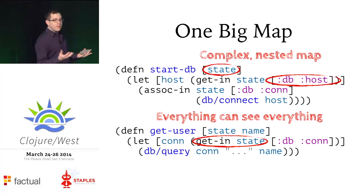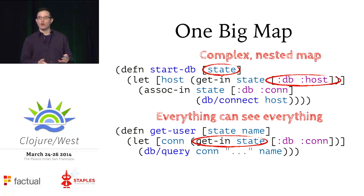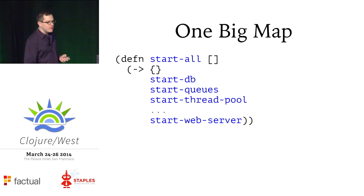This was an improvement — the state is at least local to the function. But the problem with having just one of these is that it ends up being very big and complicated. You have this deeply nested map with lots of nested maps and other things inside it, and in any given function you may be reaching through several layers of that to get at the piece of state you need. It also means that if you're using the same map everywhere, everything can see everything. Every piece of state is always available — effectively, this is just another way of recreating global state. You end up with an application where every piece of code is very tightly coupled to every other piece of code.